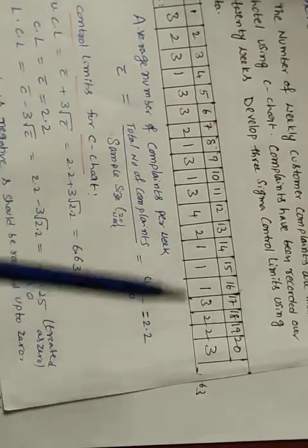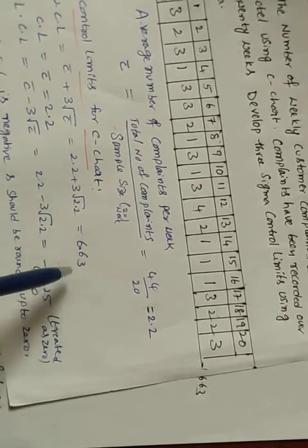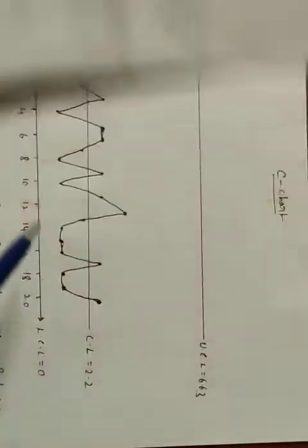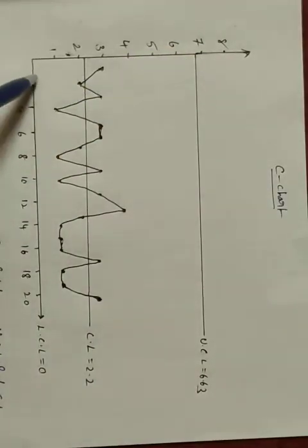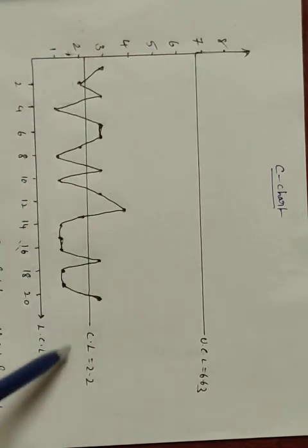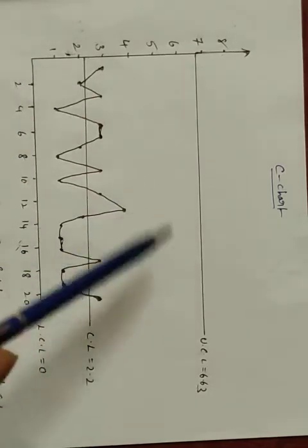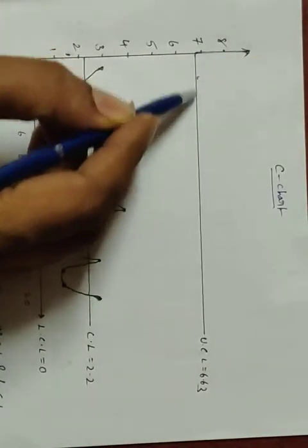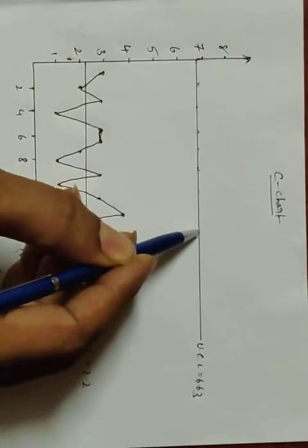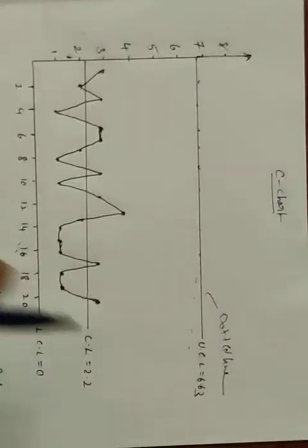UCL is 6.63. The highest data value is 4, but we plot up to the UCL of 6.6 on the Y-axis. The least value is 0. On the chart: the center line is at 2.2, and UCL is shown as a dotted line at 6.6. Sample numbers are plotted on the X-axis.